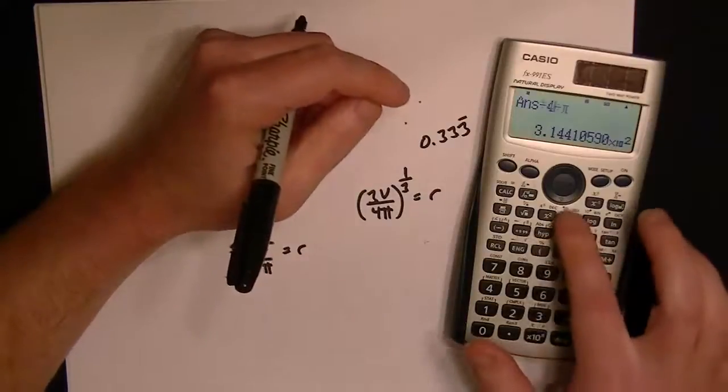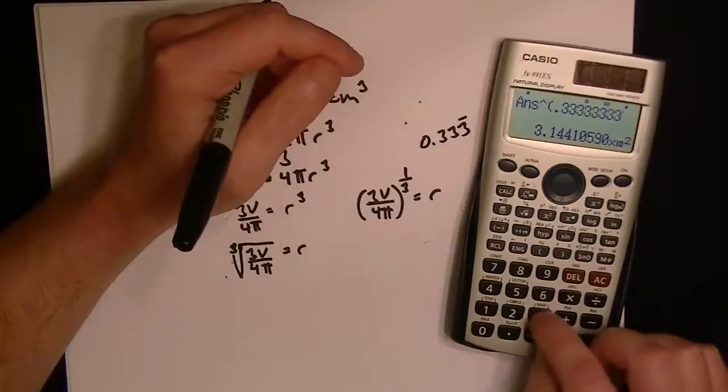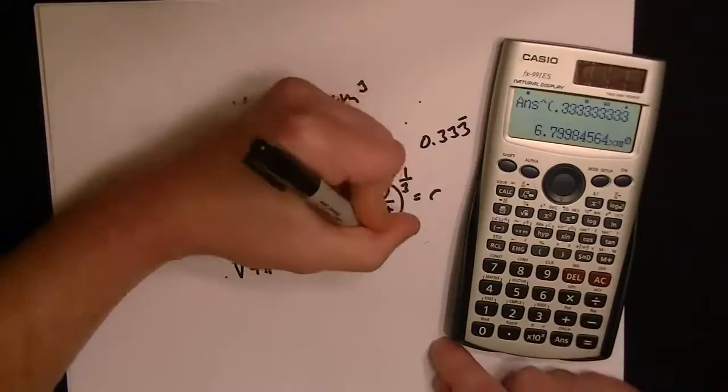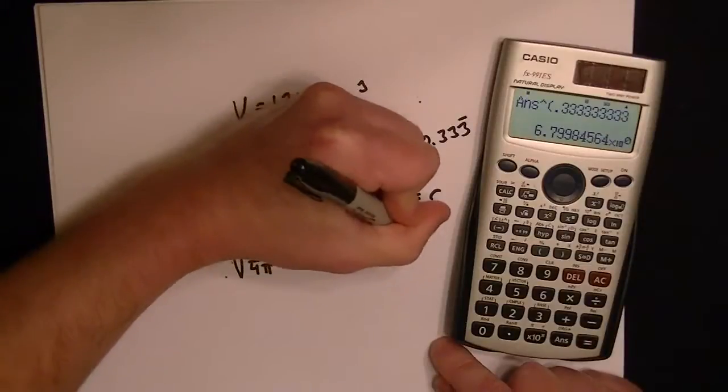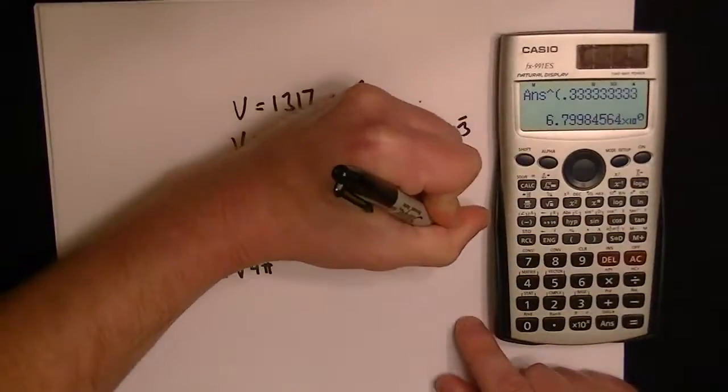Now we have to put it to the power of 1 third, so .333, you just put in a bunch of threes. This gives us an r of 6.8, and it's in centimeters.